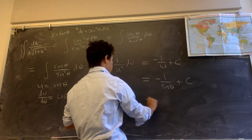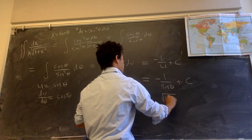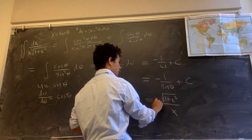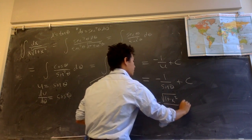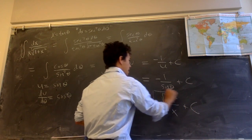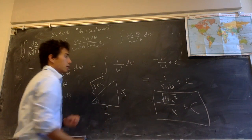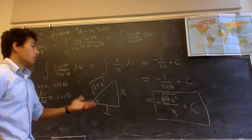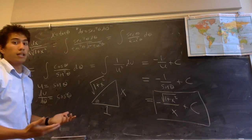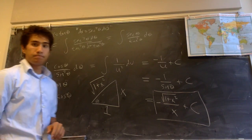Substituting back, this becomes negative square root of 1 plus x squared over x, plus c. The negative sign is still there. This is an expression we can work with if this were a definite integral or if we needed to use it in some other way.